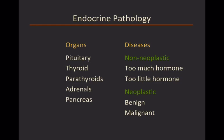We're going to start out talking about the pituitary gland because it's really the boss of all the other endocrine organs. It releases hormones that cause most of the other end organs to do something. As we go through each organ, we'll talk about diseases — neoplasms and non-neoplastic — and a key theme: diseases that make too much hormone versus those that cause too little hormone release.